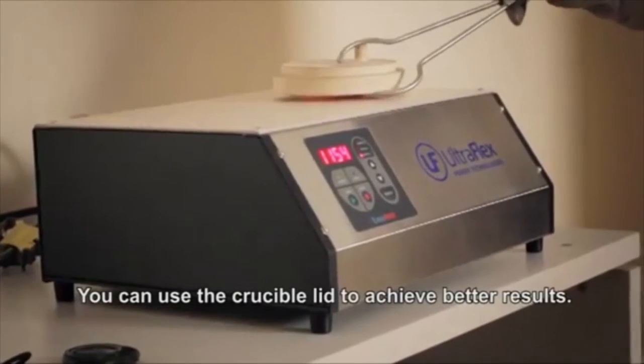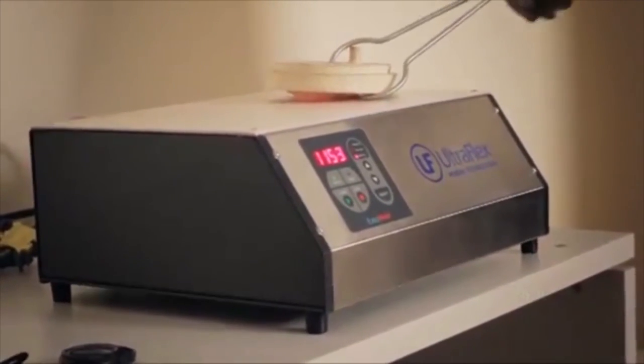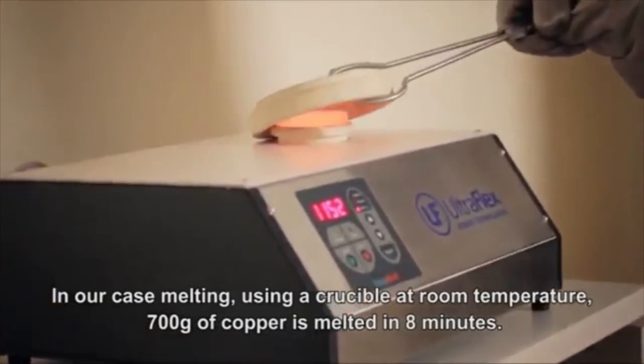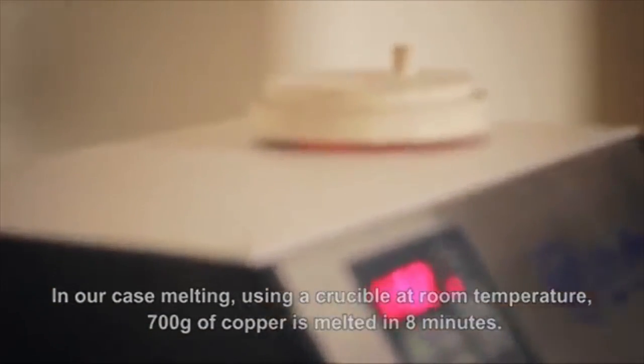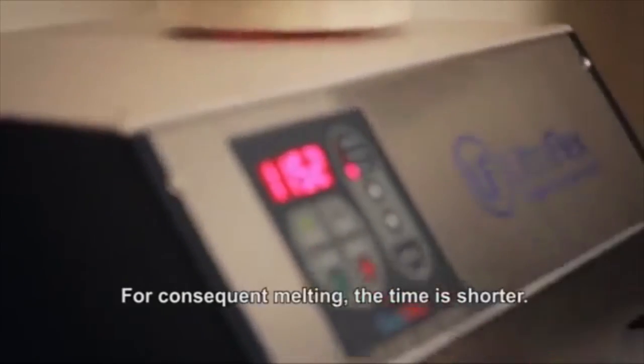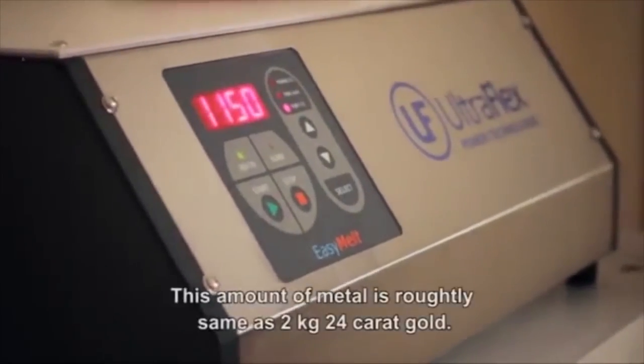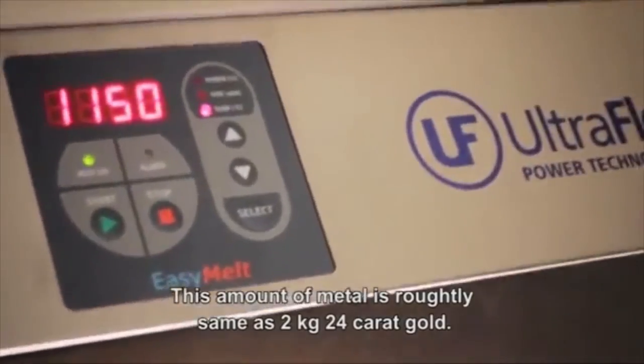You can use the crucible lid to achieve better results. In our case, using a crucible at room temperature, 700 grams of copper can be melted within 8 minutes. For consequent melting, the time is shorter. Remember, this amount of metal is roughly the same as 2 kilograms of 24 carat gold.